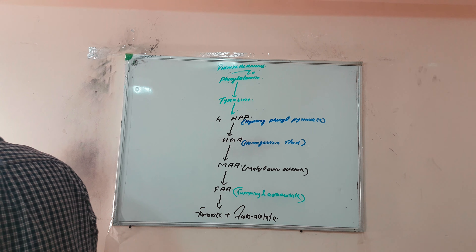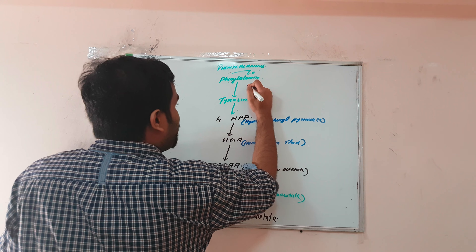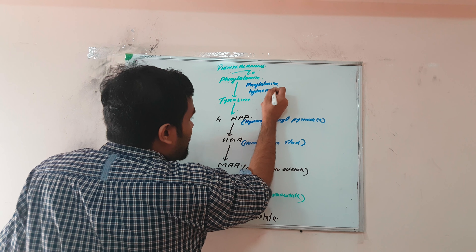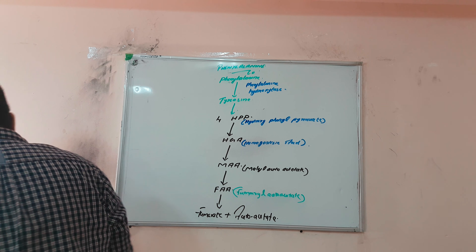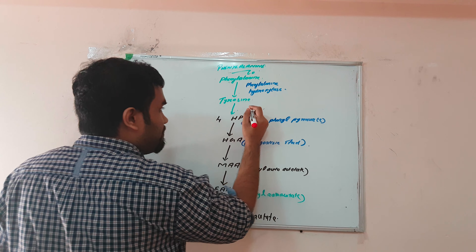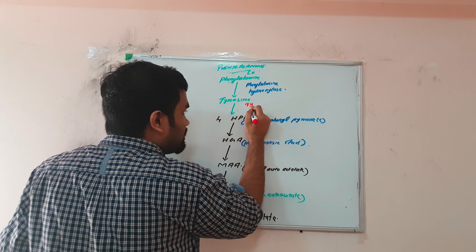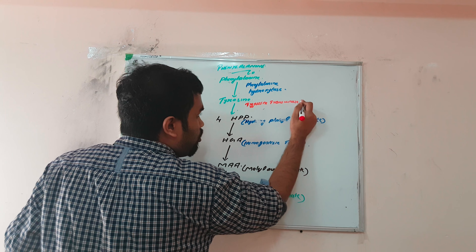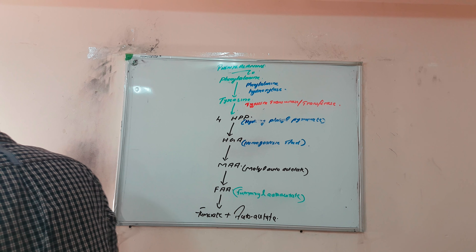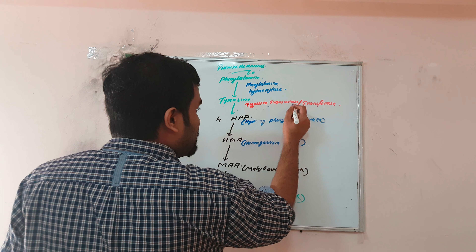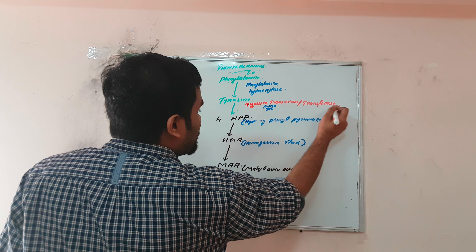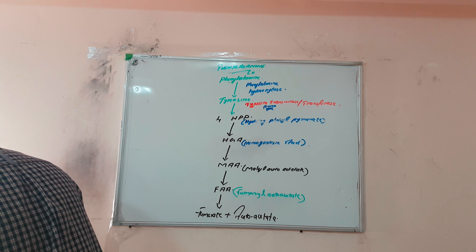Now the enzymes at each step are very important. You already know phenylalanine becomes tyrosine by phenylalanine hydroxylase. Then tyrosine becomes 4HPP by tyrosine aminotransferase.